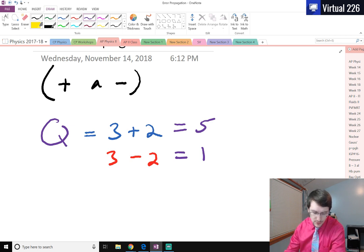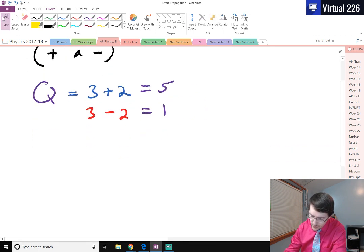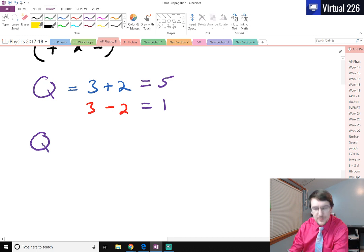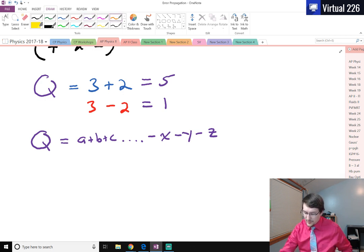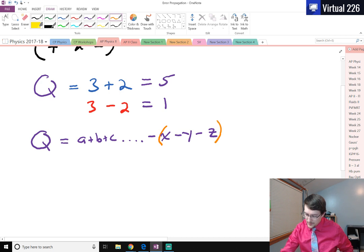The issue comes in when you're trying to find the deviation of Q. Let's write out Q as the addition or subtraction of any number of numbers. We can write this as A plus B plus C, and there could be more things we add. Then we're subtracting other things if we need to: minus X, minus Y, minus Z.